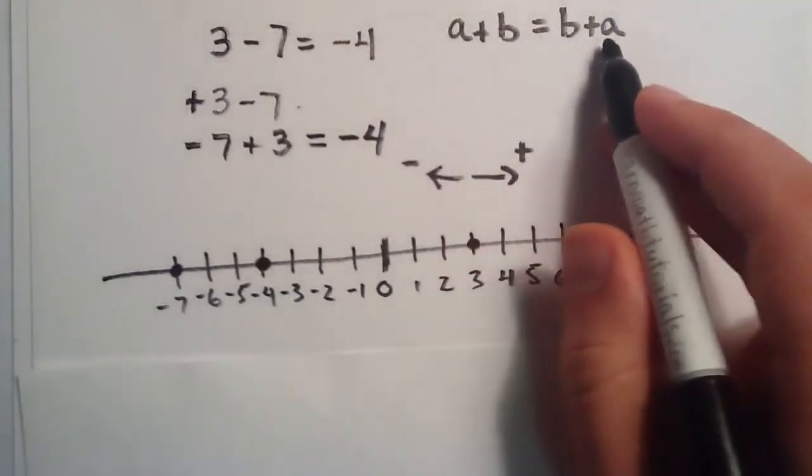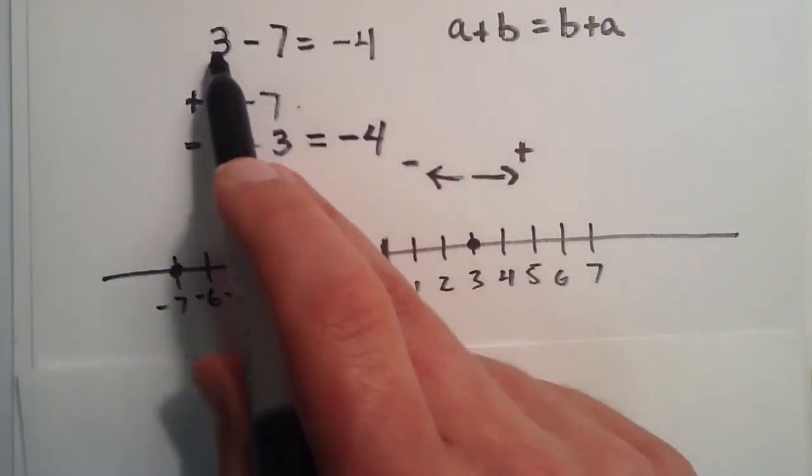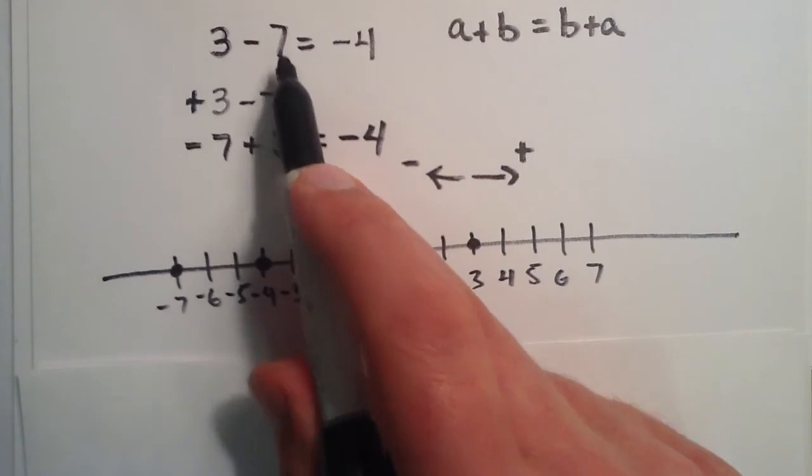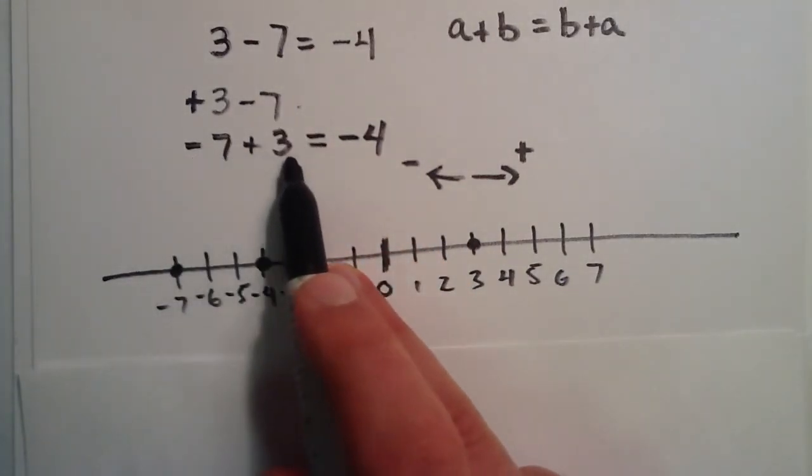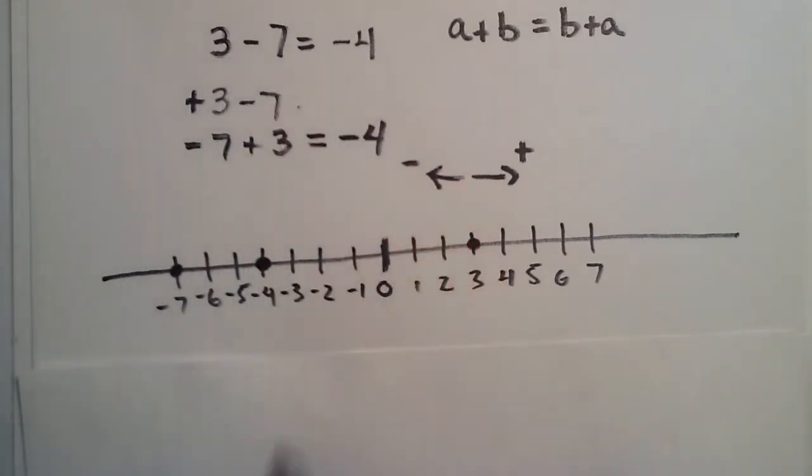So because of the commutative property of addition, it doesn't matter whether you have positive 3 minus 7, or negative 7 plus 3. Either way you write it, you're going to end up with the same answer.